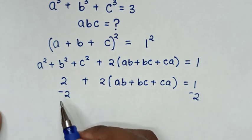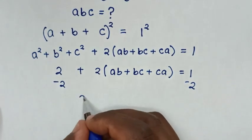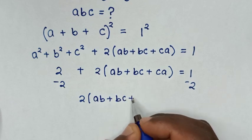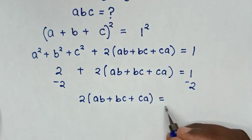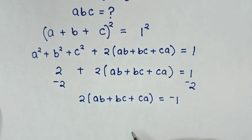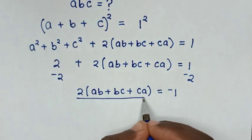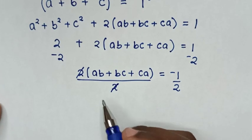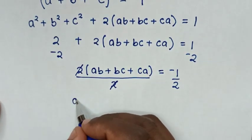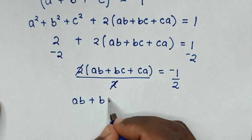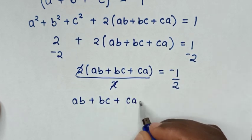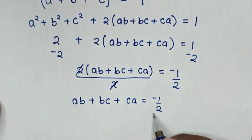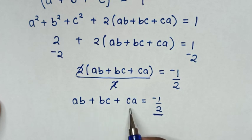Then, 2 minus 2 is 0, so 2(AB plus BC plus CA) equals 1 minus 2, which is negative 1. In the next step, we divide both sides by 2 — these 2s cancel — giving AB plus BC plus CA equals negative 1 half. Note this value: AB plus BC plus CA equals negative 1/2.